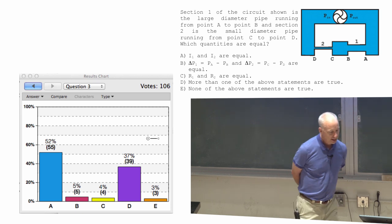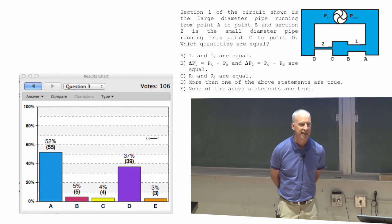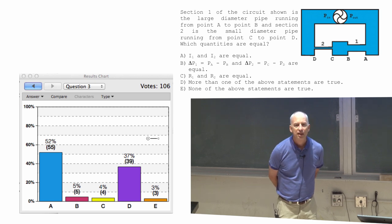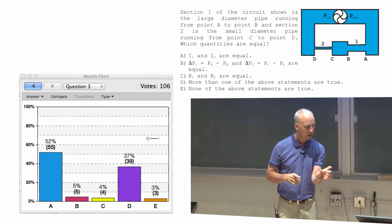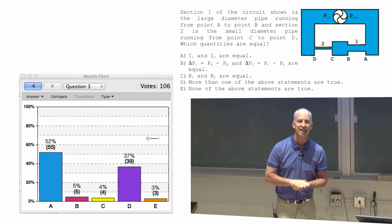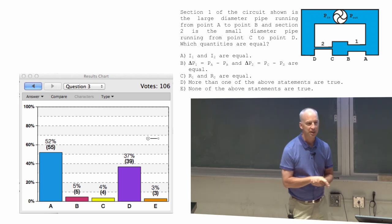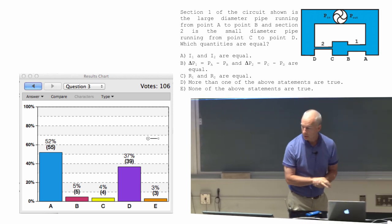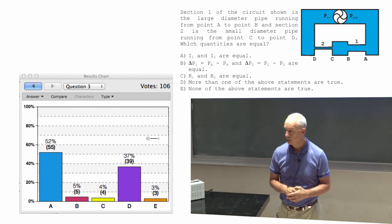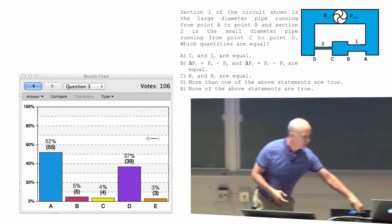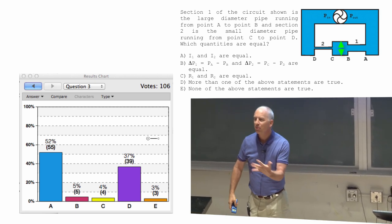Are the resistances between points A and B the same as the resistance between points C and D? What do you think? If you had a straw that looked like the section between A and B and you tried to drink water, and you had a straw that looked like the section between C and D and you tried to drink water, is one of them easier than the other? And the answer is yes. The resistance is going to be smaller in section one, because it's a big old pipe. In fact, that's actually the reason why I put even bigger pipes elsewhere.